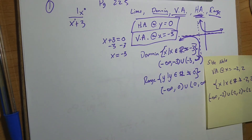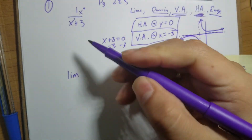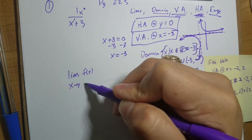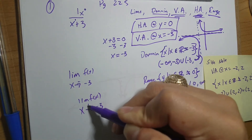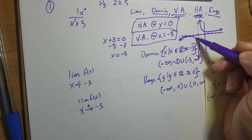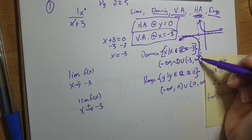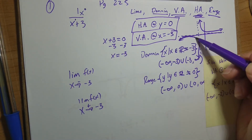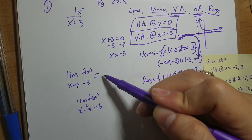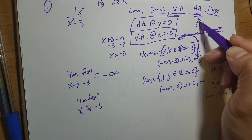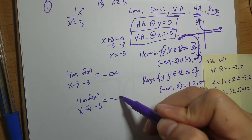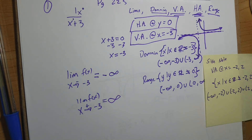Now let's talk about the limits. They're asking for the limit of f(x) as x approaches negative three from the left side, and the limit of f(x) as x approaches negative three from the right side. From the left side, as I follow this line and get closer and closer to negative three, it goes toward negative infinity. Approaching from the right side, it goes toward positive infinity.